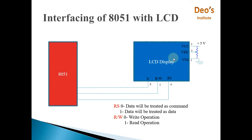Pin number 6 is the enable pin. The enable pin is used to latch data present on the data pins. When the enable pin goes from high to low, this transition causes the LCD to interpret and execute the command at that instant. So a low on this pin indicates that data is available on the pins and is to be latched.